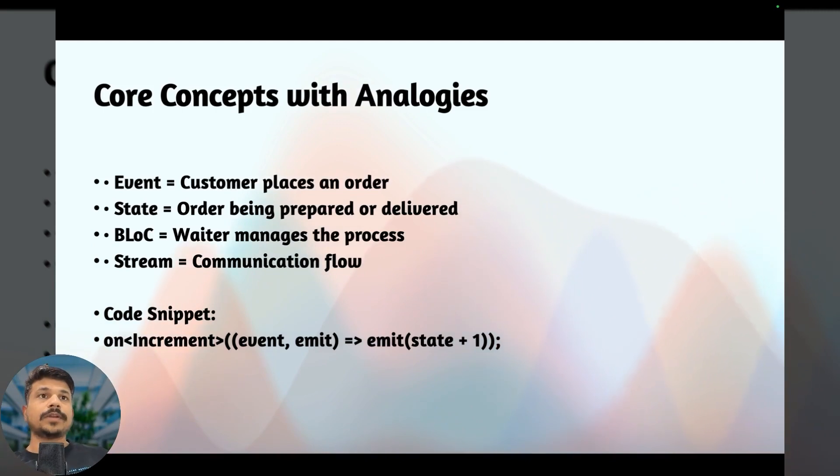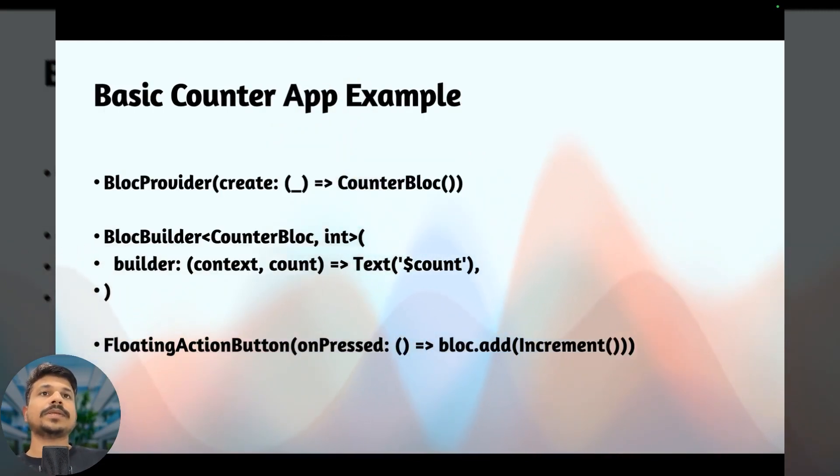In the code snippet, you can see there is an increment event which is emitting the state and incrementing it by one. Now let's look at a basic Flutter counter app example. Using BlocProvider to provide a BLoC instance, then the BlocBuilder listens to the state and rebuilds the UI when needed. When the floating action button is pressed, it dispatches an increment event. Simple, clean, and powerful.